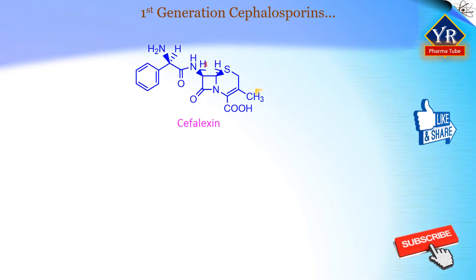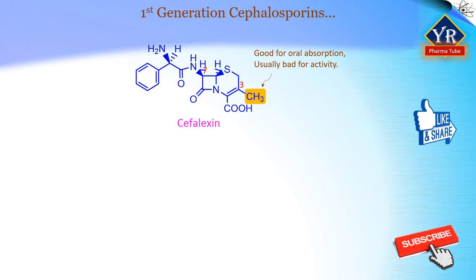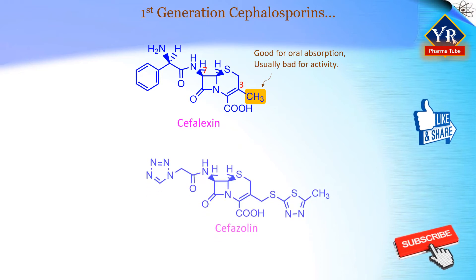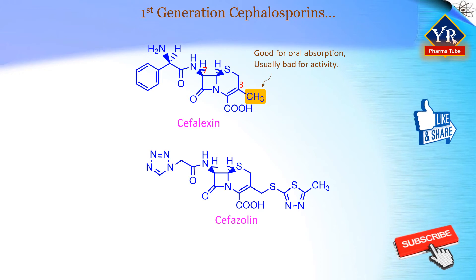Cephalexin has a methyl substituent at the third position, which appears to help oral absorption. As the methyl group is not a good leaving group, it is bad for antibacterial activity. However, the presence of a hydrophilic amino group at the alpha-carbon atom of the 7-acylamino side chain helps to restore activity, and cephalexin is one of the few cephalosporins which is orally active. It is not clear why the 3-methyl group is so advantageous for absorption through the gut wall.